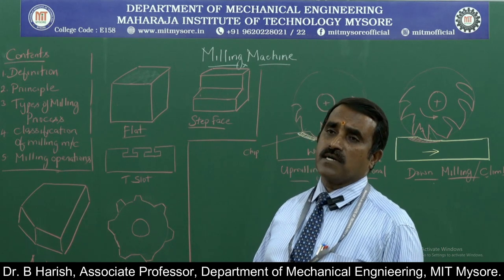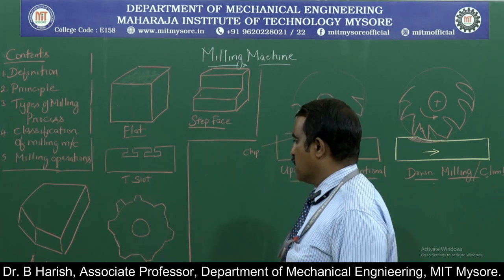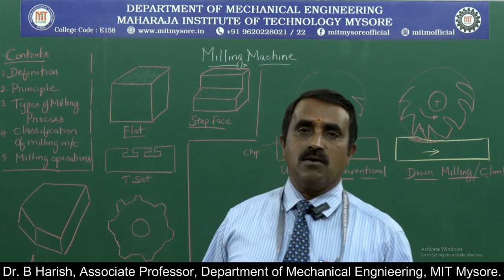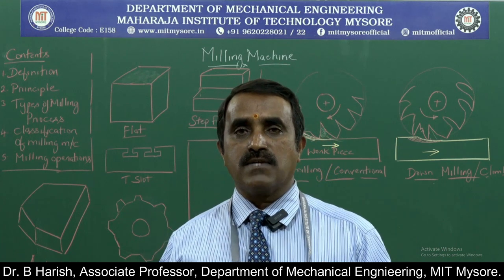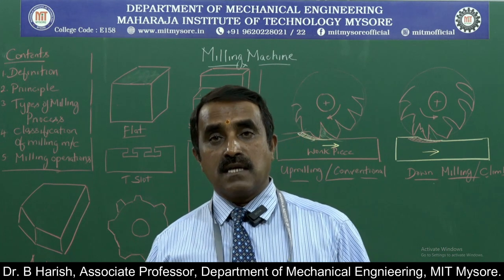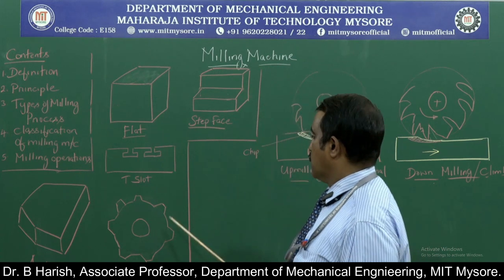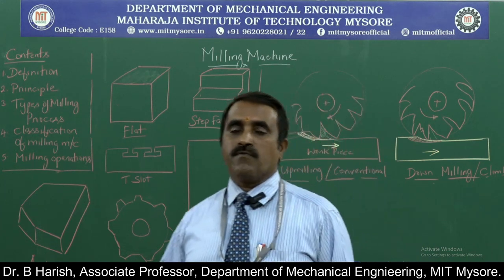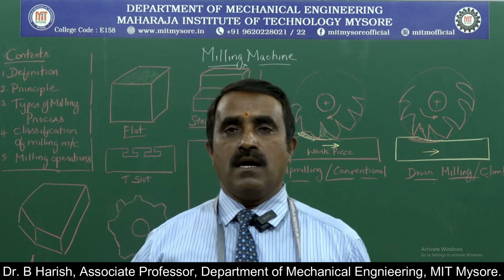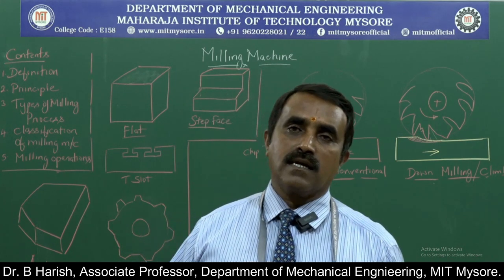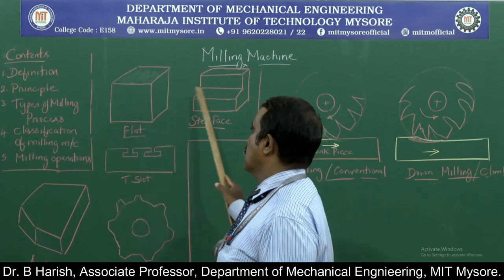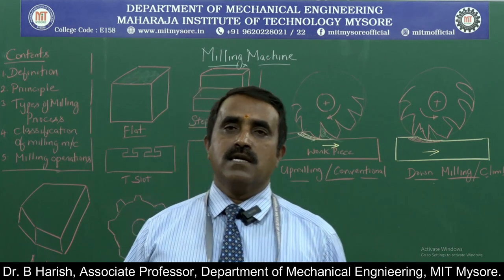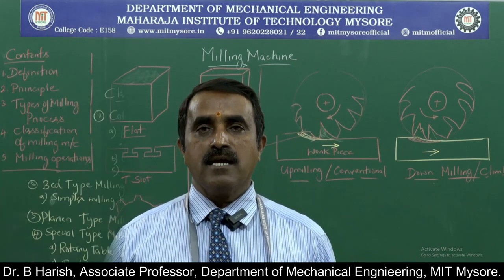One more important operation performed on a milling machine is cutting gear teeth. A gear is a component that meshes with other components to transfer motion. Cutting teeth on a gear can also be performed on a milling machine. So we can produce flat surfaces, step surfaces, angular surfaces, T-slots, and gear teeth on a milling machine.